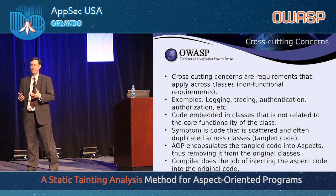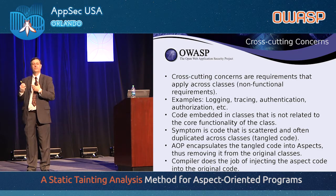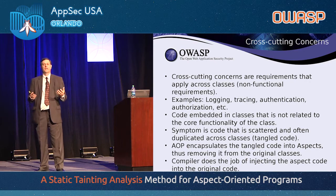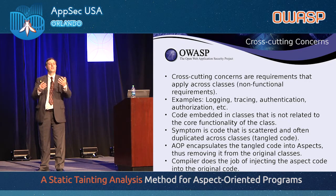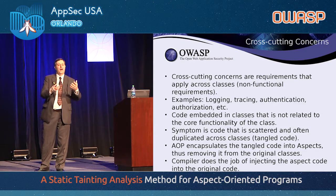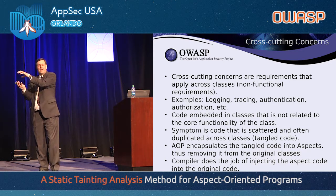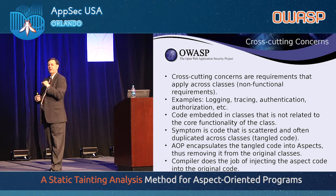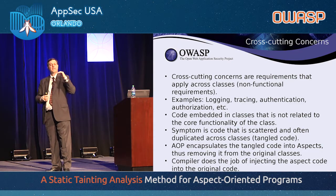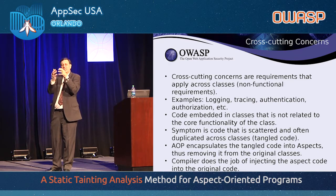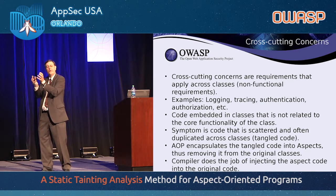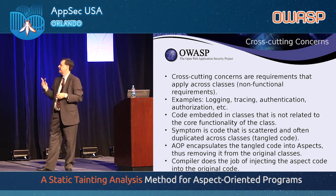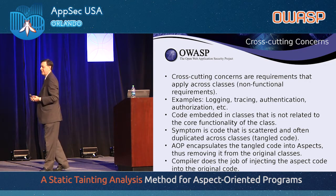They realized that object-oriented programming didn't solve cross-cutting concerns. If you've got a system with 50 classes in it and you need logging, you probably have 30 or 40 classes that have some kind of logging code in them. How do you get that out of those classes? How do you put it somewhere where that logging can be in one place and none of the classes even refer to logging at all? That is what a cross-cutting concern is — a piece of logic that really belongs by itself.